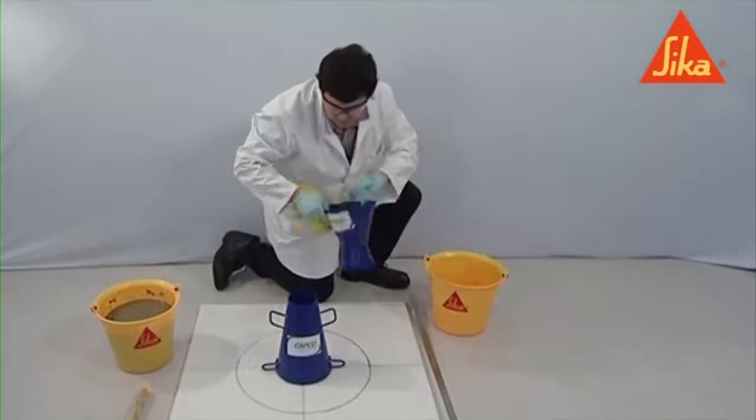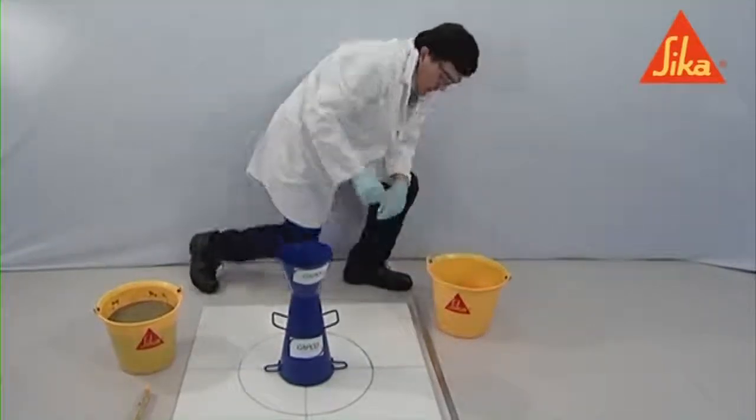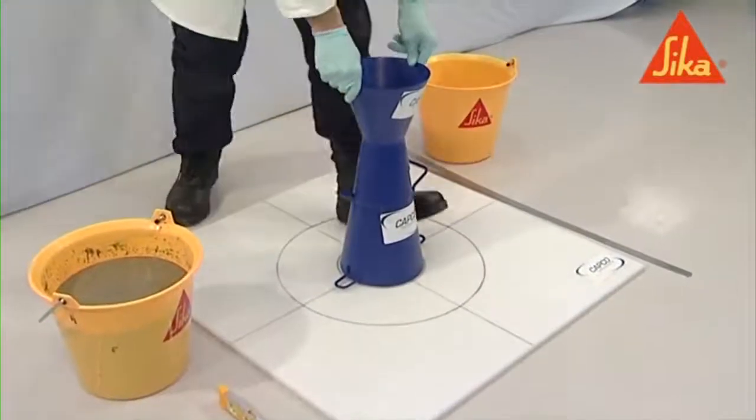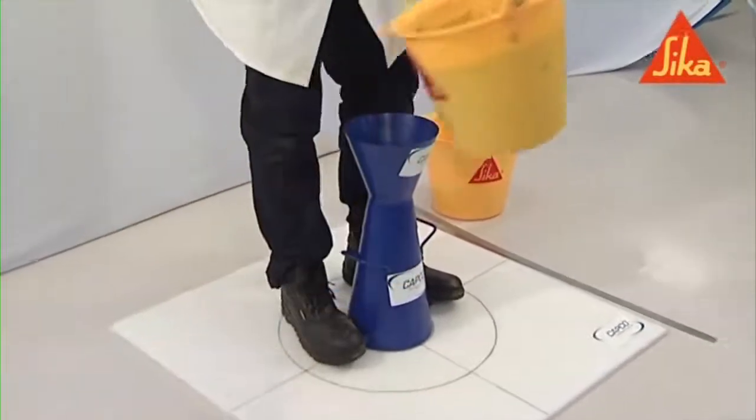Fit the collar to the cone. Place the cone centrally within the 210 mm circle on the base plate and hold it in position by standing on the foot pieces, making sure that no concrete can leak from under the cone.